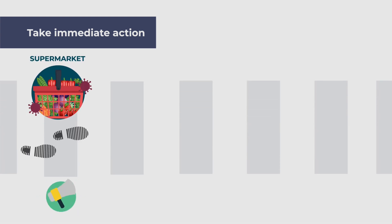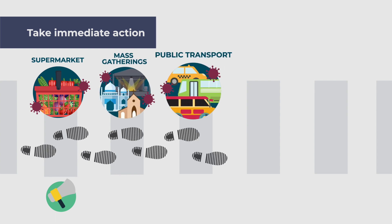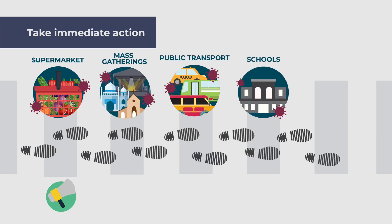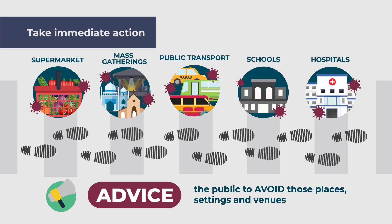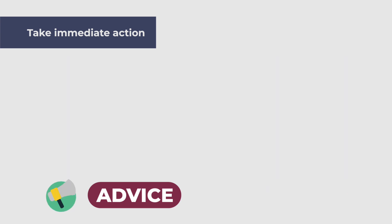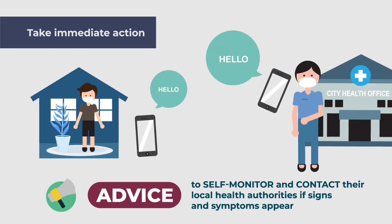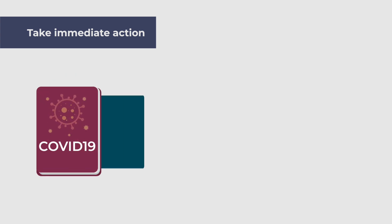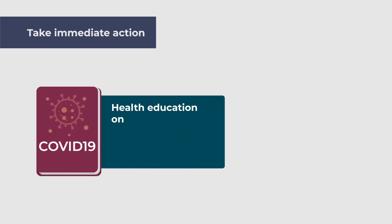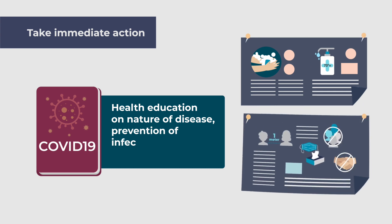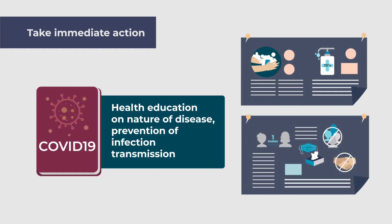Announce settings, places, and gatherings where the suspect and confirmed cases have been. Advise the public to avoid those places, settings, and venues. Advise those who were in the same event or place as a confirmed case to self-monitor and contact their local health authorities if signs and symptoms appear. Contacts and people who were in the same events or venues should also be provided with information about the disease and how they could avoid transmission to others.